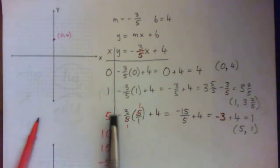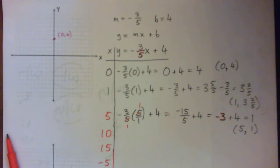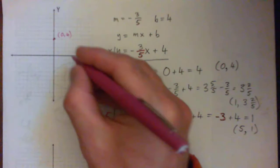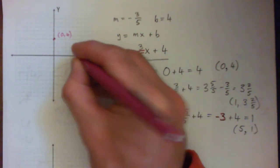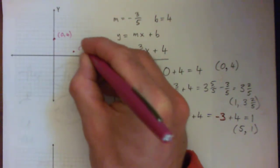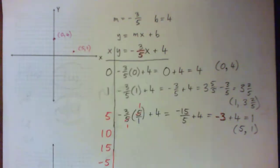Let's go ahead and graph that point, 5, 1. X is 5, Y is 1. If X is 5, you would come over 5 and go up 1. Beautiful.